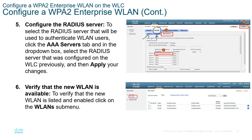From the AAA Servers dropdown, you select the RADIUS server IP address that you had configured before — telling our controller which RADIUS server it will need to use for AAA. The IP address you had previously configured will pop up in the dropdown. You then tell your wireless LAN what type of security it is going to use. Once done, apply.